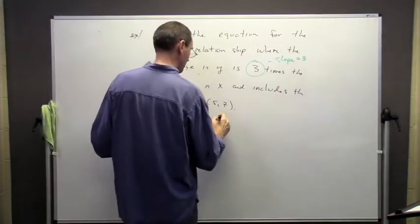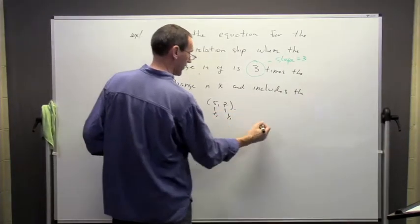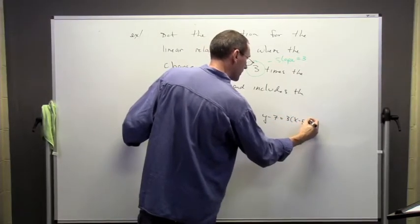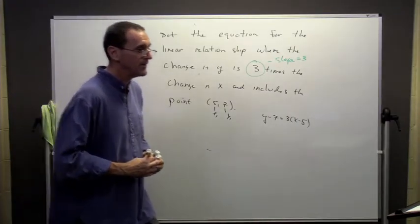And because it includes this point, this is going to be my y1, this is going to be my x1, and I'm going to have y minus 7 is 3 times x minus 5.